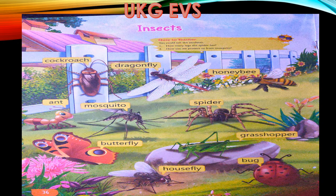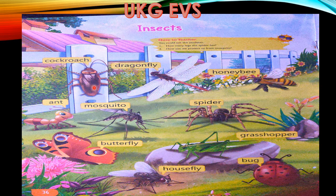Hello children, today we are going to sing about insects. Insects are small animals. First, cockroach — cockroach, it is brown in color. What is this? Cockroach.